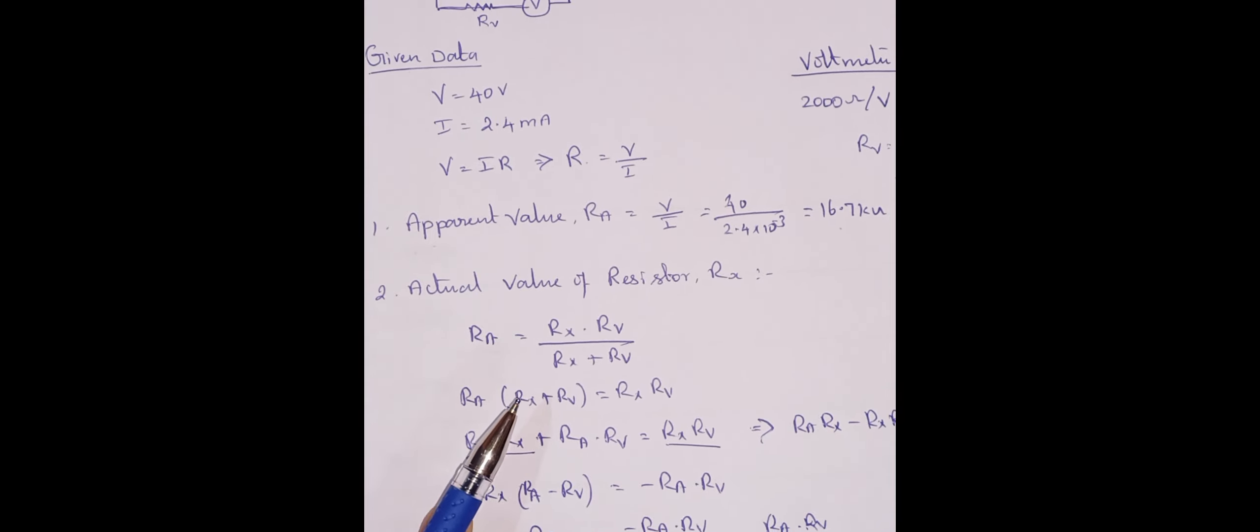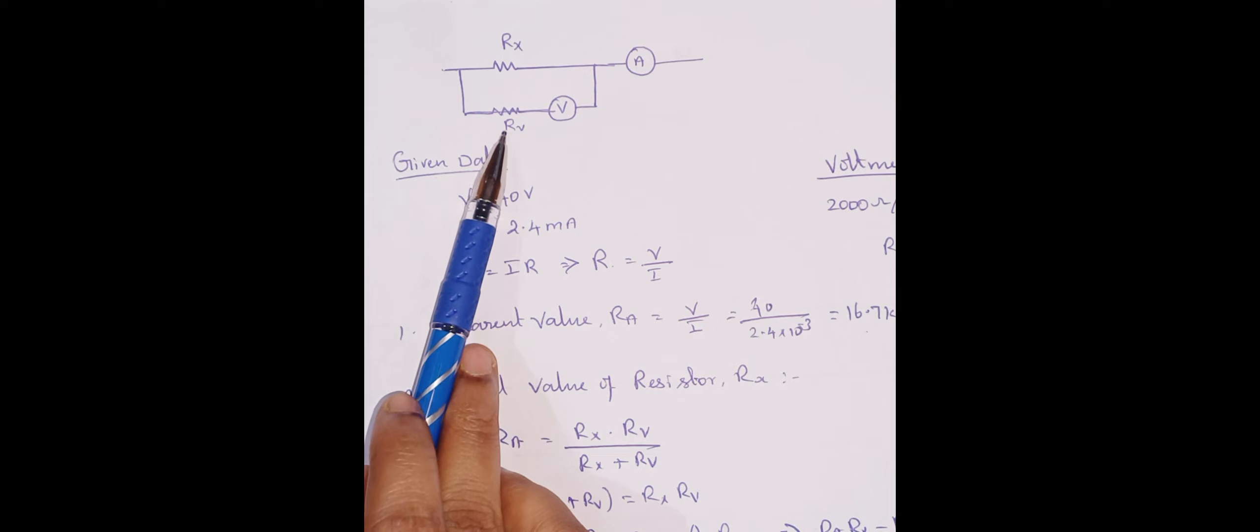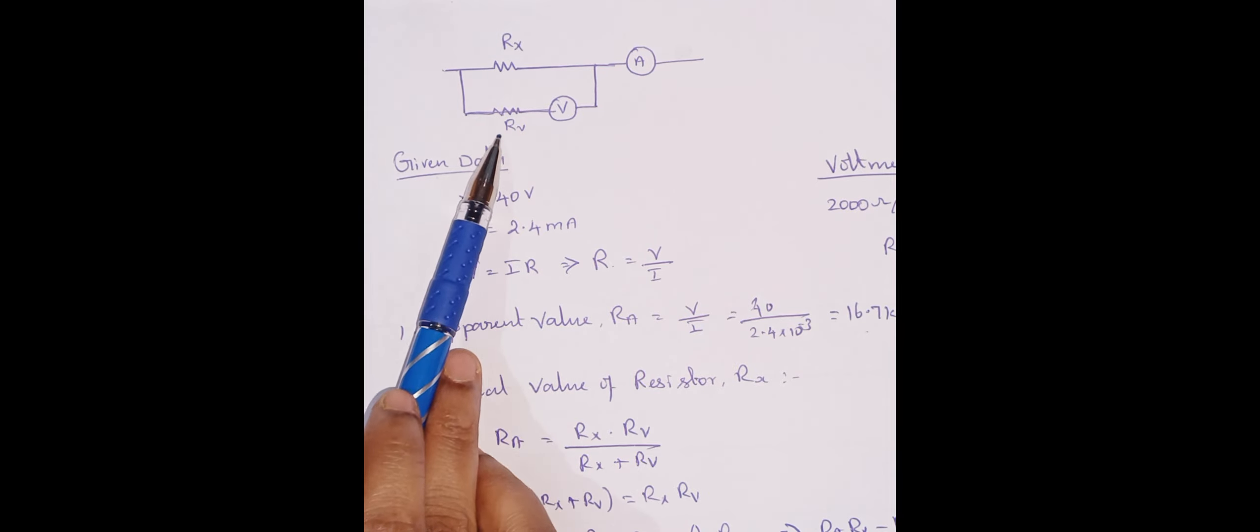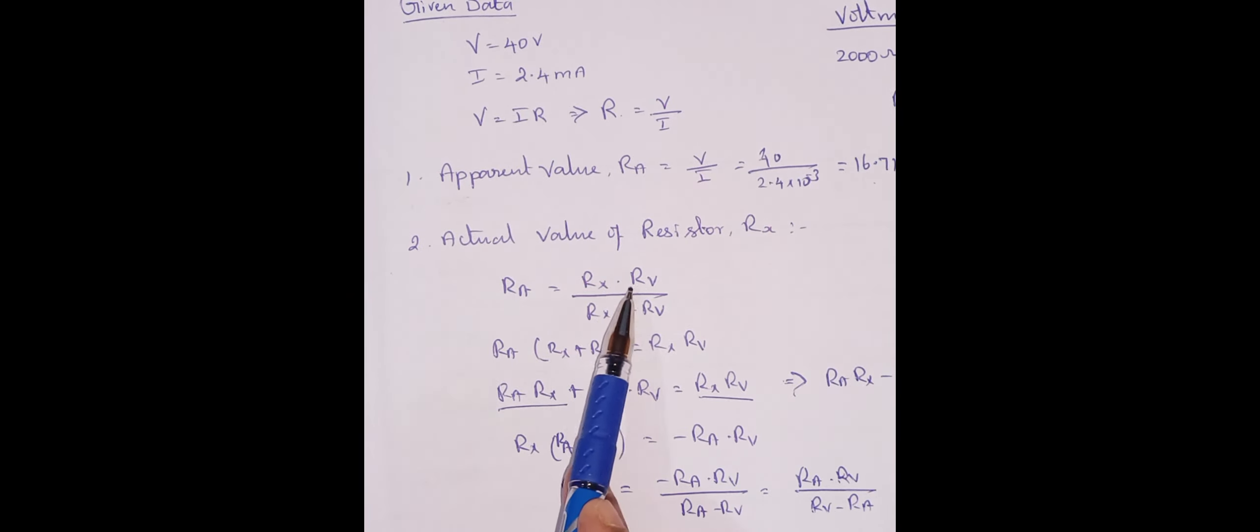Then for actual value, to find out actual value we will consider this internal resistance of voltmeter Rv. So these two resistors are in parallel, hence we have to write the parallel combination equation. So Ra is equal to Rx into Rv divided by Rx plus Rv.